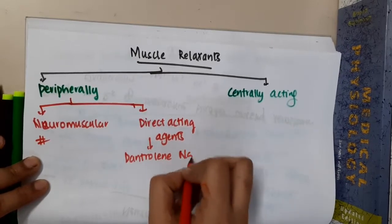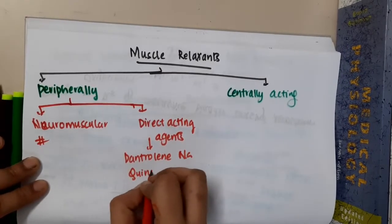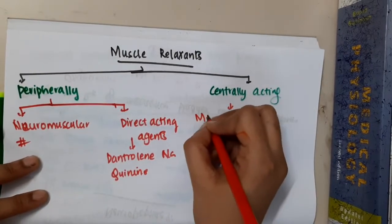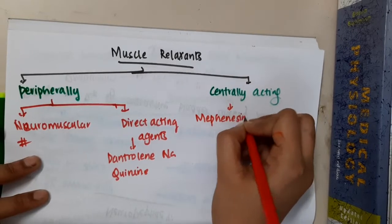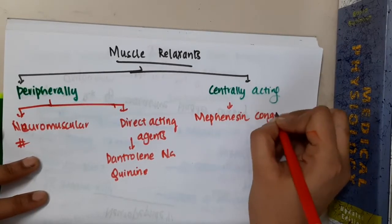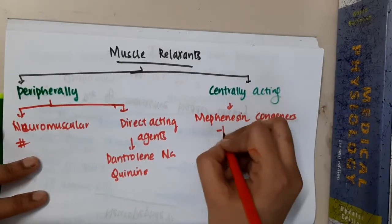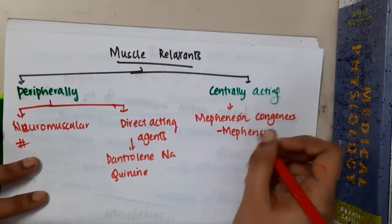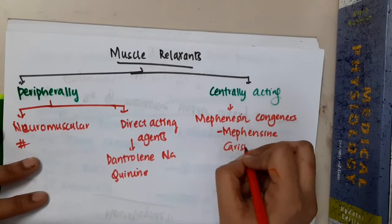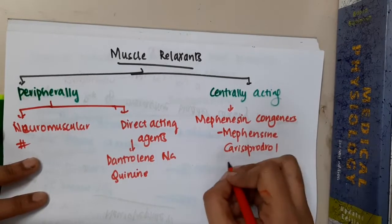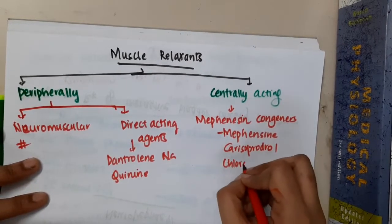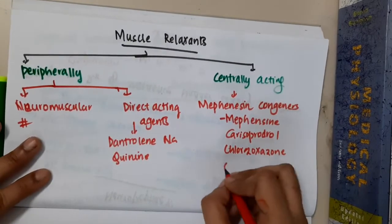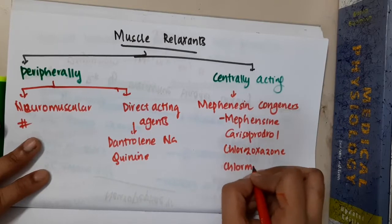If you see centrally acting agents, we have methenesin congeners. In centrally acting agents, we have methenesin congeners which include methenesin, carisoprodol, chlorzoxazone, and chlormezanone.